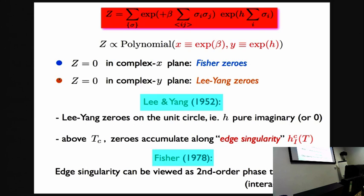We're going to be interested in the Lee-Yang zeros. Lee and Yang, a long time ago, showed that these zeros in Y are on the unit circle, which is another way to state that zeros occur when H is pure imaginary or zero. Moreover, the Lee-Yang theorem says that above the Curie temperature in the high-temperature disordered phase, Lee-Yang zeros accumulate along some H singularity.